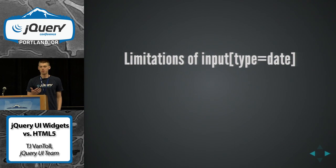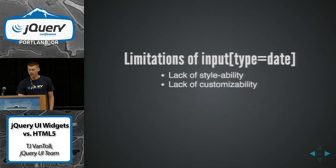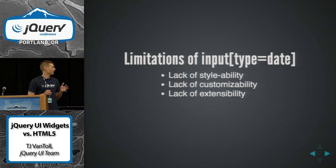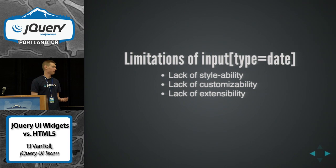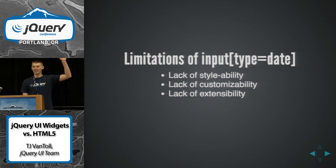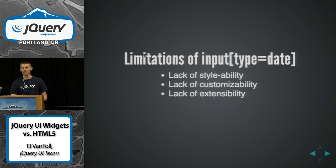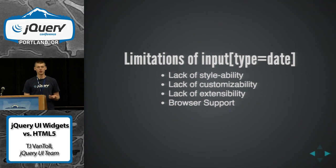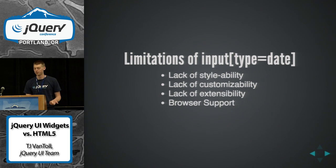Those are some of the pros of the native control, but I wanted to get into some of the problems. It's mostly that you have to take what you get. You don't get a whole lot of control over how they look, how they work, and how they behave. This really isn't anything new for form controls — how many people have tried to do anything non-trivial to change the look or behavior of a select element? It's no different with these native pickers. The other problem still is browser support. It is in Chrome Stable and the latest mobile browsers, but you're still leaving out a lot of users, specifically Firefox.